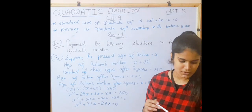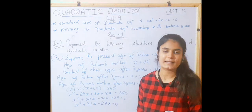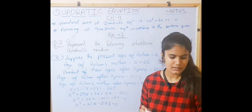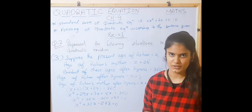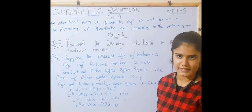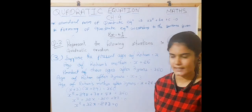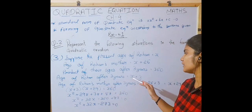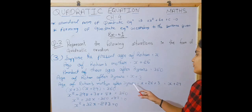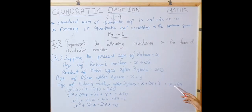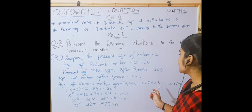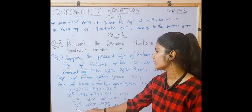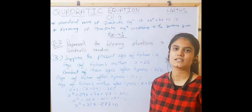Situation 3: Rohan's mother is 26 years older than him. The product of their ages after 3 years will be 360. Suppose Rohan's present age is X, then his mother's age is X + 26. After 3 years, Rohan's age is X + 3 and his mother's is X + 29. So (X + 3)(X + 29) = 360, giving X² + 32X - 270 = 0, which is a quadratic equation.